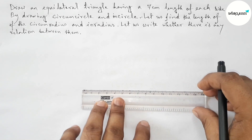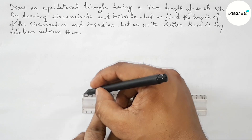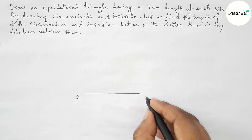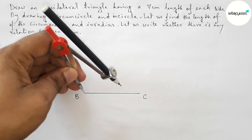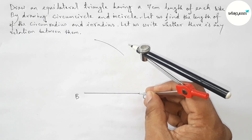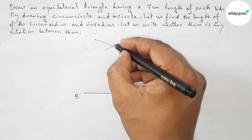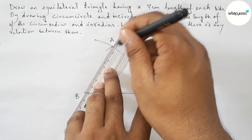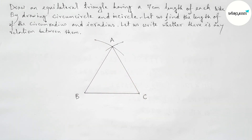First of all, drawing a line segment of length 7 centimeters. Taking point B here and point C here, so BC is a 7 centimeter line segment. Now taking the same length with the help of a compass, drawing an arc and cutting it, so both arcs meet at a point — taking that as point A. Now joining AB and then AC to complete the equilateral triangle.